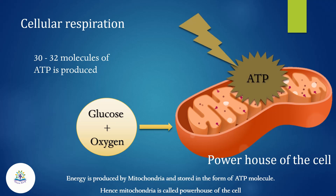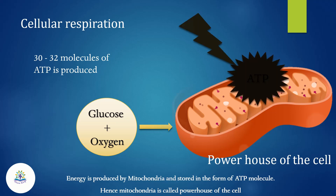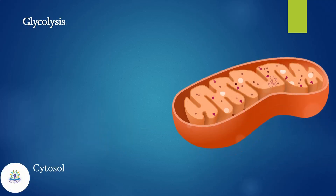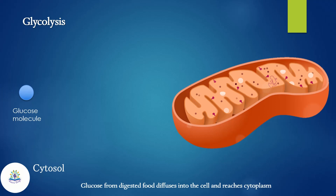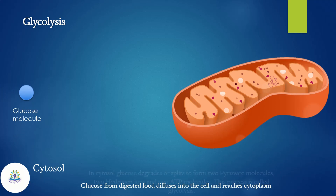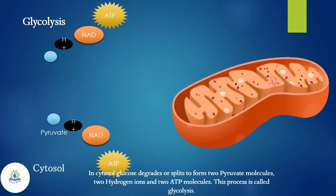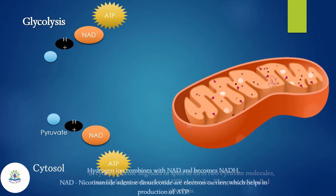The first step in cellular respiration is glycolysis. Glucose from digested food diffuses into the cell and reaches the cytoplasm. In the cytosol, glucose degrades or splits to form two pyruvate molecules, two hydrogen ions, and two ATP molecules. This process is called glycolysis.